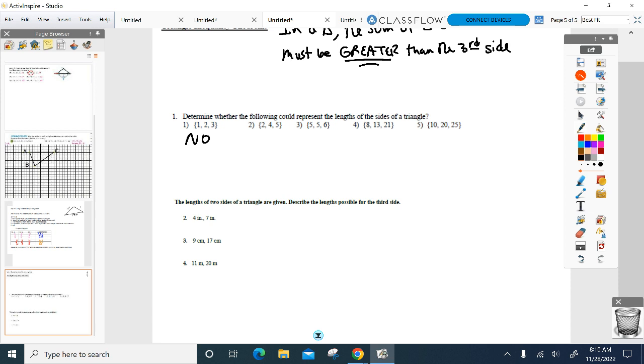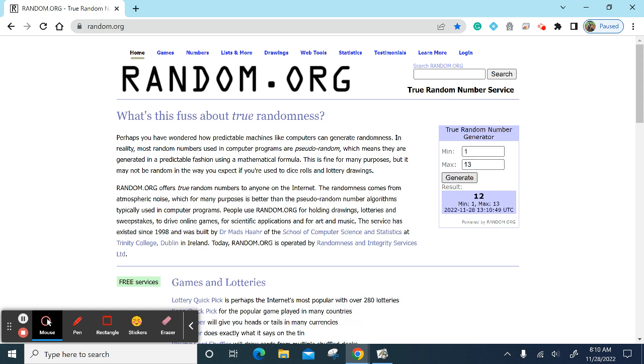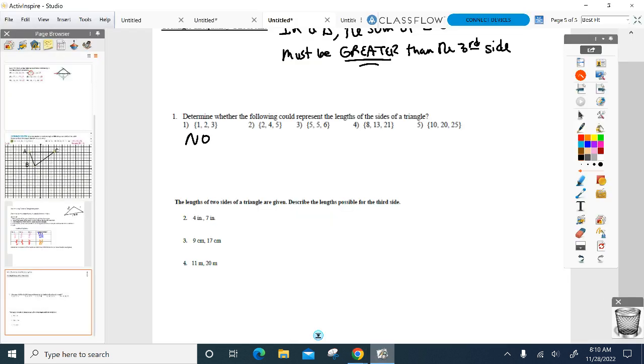Some of you guys are starting to find a quick trick: just pick the two smaller sides, add them up, see if it's bigger than the third. If it is, it's probably going to work for the rest of them. 2, 4, 5—good enough for a triangle? 1, 2, 13—good enough for a triangle? Redemption.